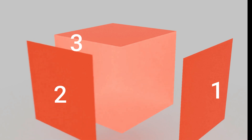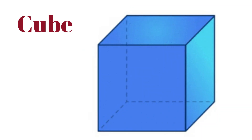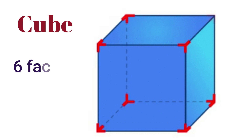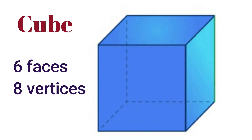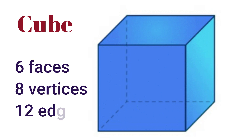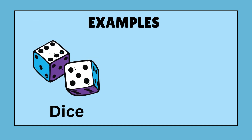The first one is cube. It has six square faces — you can see the six square faces. It has eight corners, which are called vertices. There are 12 edges in it. Where the faces meet is called an edge.